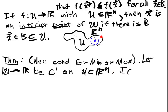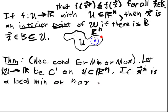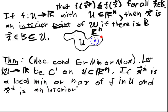If x* is a local min or max of f in U, and x* is an interior point of U, that is it's in some ball of some radius that fits in U,